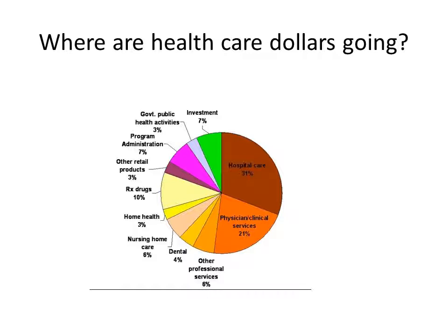Other developed countries spend a similar percentage of their budget on drugs, but we spend more money on everything than most countries, and we definitely pay higher prices for our drugs than other countries do. There are also other costs such as program administration and investment in healthcare to create new technologies and build new hospitals. Nursing home and home health care is only at 3% now, but it's one of the fastest growing sources of expenditures for our healthcare system.